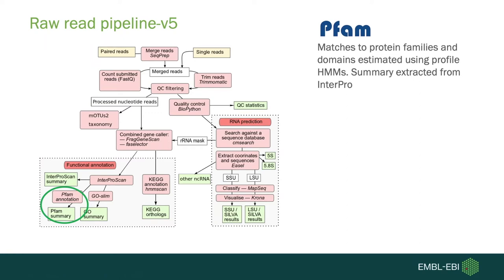Moving on to the raw read pipeline, we've added Pfam annotations. Pfam is one of the member databases of InterPro and the annotations are passed from the InterPro results — it is somewhat redundant, but Pfam is used very widely and covers a lot of the protein space, so we wanted to provide these as a separate annotation and visualization. Pfams are protein families and domains assigned using profile HMMs.